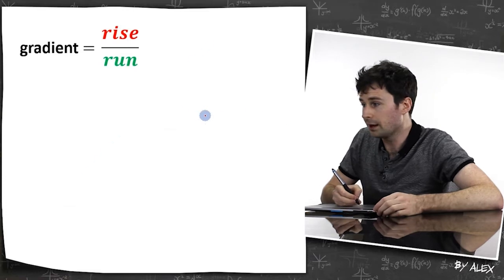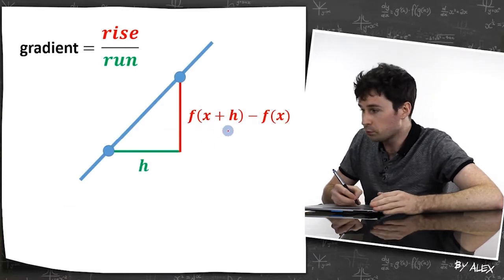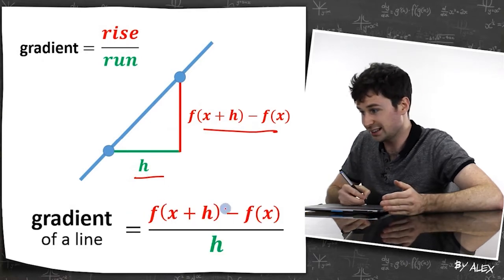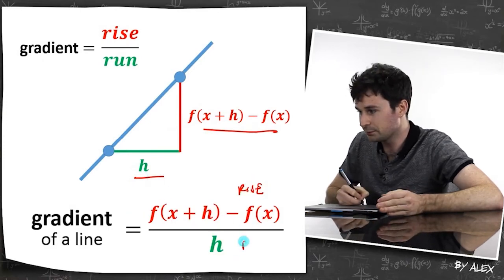Gradient equals rise over run, and we've learned before that rise is this stuff here and run is this stuff here, so the gradient of a line is actually this, which is the rise divided by the run, which is this.